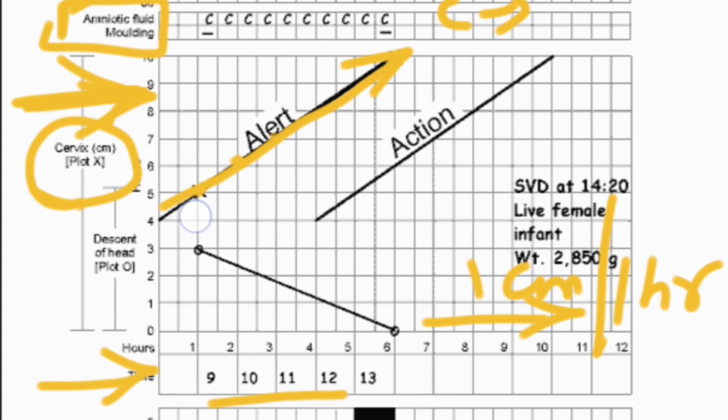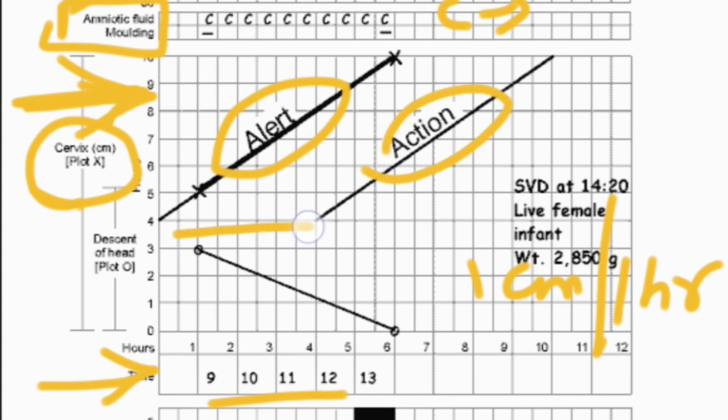If it is not opening 1 centimeter for 1 hour, then it is an abnormal delivery. For example, if at 9 o'clock it is on 5, and at 11 o'clock it is on 10, like in 2 hours gap it is opening 1 inch, then it is an abnormal delivery. We need to do C-section. Here there are two lines: one is alert line and the other is action line. And the gap between these two lines is 4 hours.